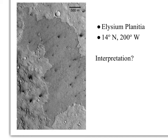Here is the kind of image we might see looking down on a particular area of Mars from orbit. This is Elysium. The first step is: what do you actually observe in this picture? Someone says craters — but is 'craters' an observation or an interpretation? What do you actually see?